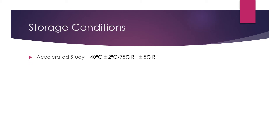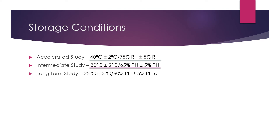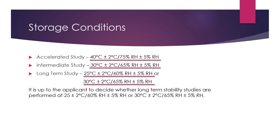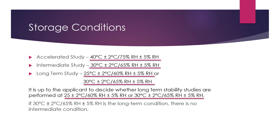Regarding storage conditions: the accelerated storage conditions are 40°C ±2°C and 75% RH ±5%. For intermediate storage, it is 30°C and 65% RH, and for long-term it is 25°C/60% RH or 30°C/65% RH — the choice depends on the applicant and the region in which they are working. An important point to note is that if 30°C/65% RH is used for long-term conditions, there is no requirement to have an intermediate condition.